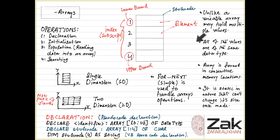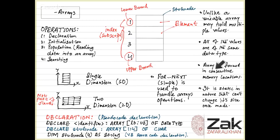Unlike a variable, an array may hold multiple values, and all of those values are of the same data type. Arrays are formed in consecutive memory locations. If you create several variables, they are not necessarily adjacent to each other, but an array is. If you have got an array of multiple locations they will all be in the same consecutive place. It is static in nature — it cannot change its size once made.